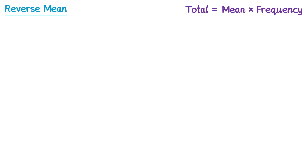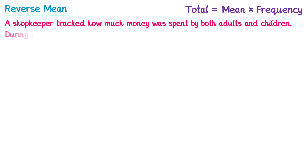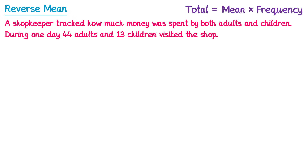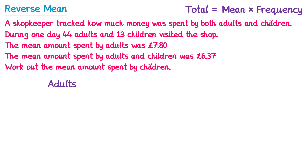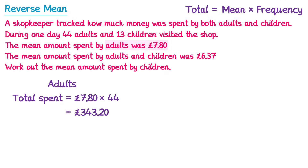Next, we'll try a slightly different question. A shopkeeper tracked how much money was spent by both adults and children. During one day, 44 adults and 13 children visited the shop. The mean amount spent by adults was £7.80, and the mean amount spent by adults and children combined was £6.37. We need to work out the mean amount spent by children. For the adults, we do £7.80 multiplied by 44, and find the answer is £343.20.